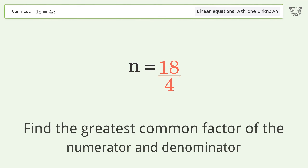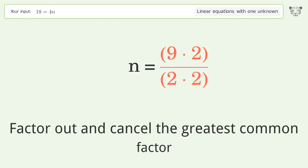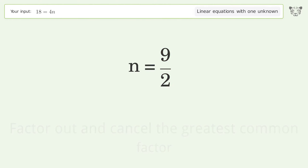Find the greatest common factor of the numerator and denominator, then factor out and cancel it. And so the final result is n equals 9 over 2.